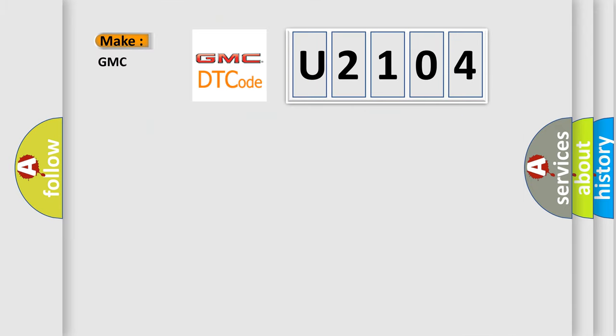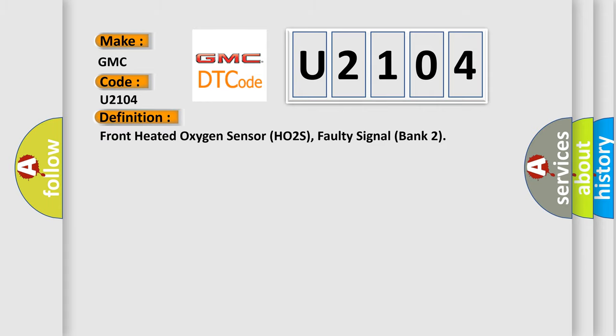So, what does the diagnostic trouble code U2104 interpret specifically for GMC car manufacturers? The basic definition is Front heated oxygen sensor HO2S, faulty signal bank 2.